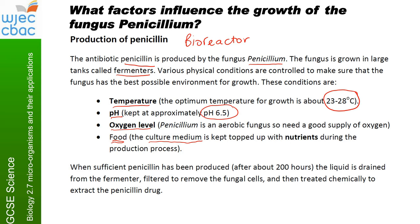When sufficient penicillin has been produced — after about 200 hours — the liquid is drained from the fermenter. It's filtered to remove the fungal cells and treated chemically to extract the penicillin drug and purify it, making sure it's not contaminated with any bacteria or other chemicals. They check each batch before packaging the antibiotic.